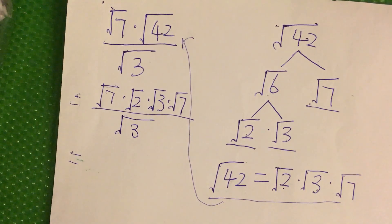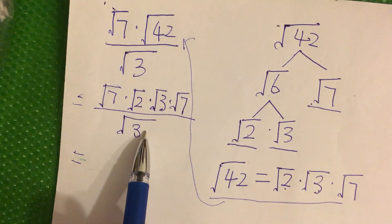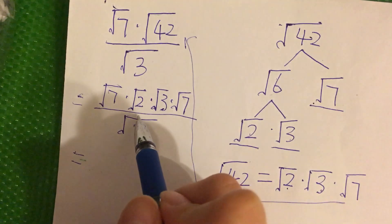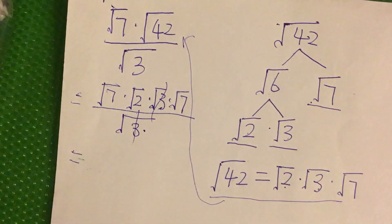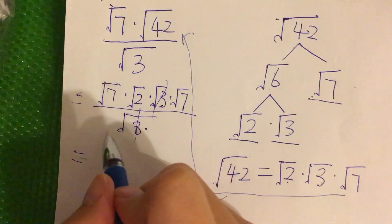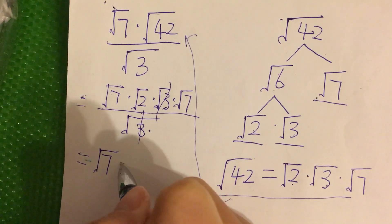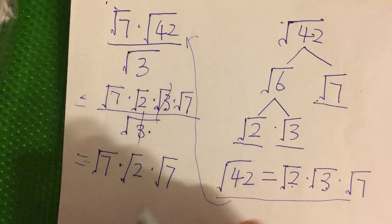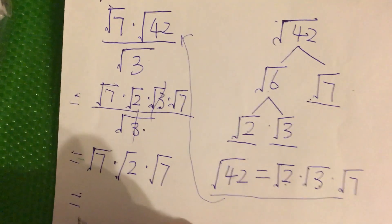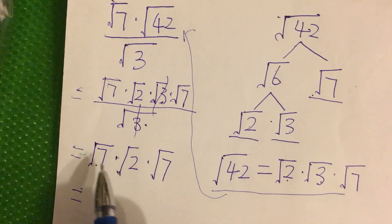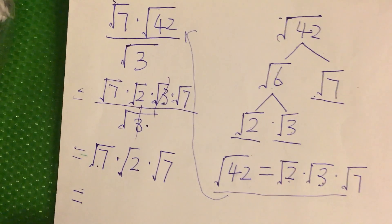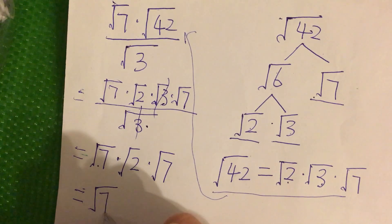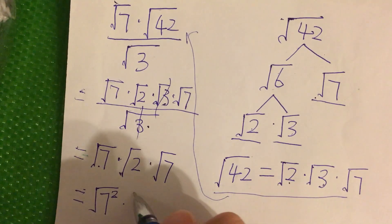We see that both the numerator and denominator have square root of 3, so we can cancel out the square root of 3. What's left is square root of 7 times square root of 2, and square root of 7. We also see that we have two square root of 7 terms, so we can write square root of 7 to the power of 2, times square root of 2.